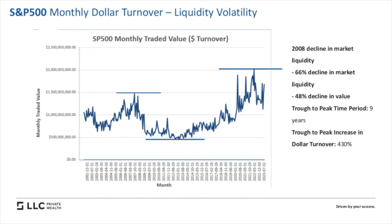Now, this is different than price action. The S&P 500 actually rallied fairly quickly after that, after all the selling had flushed through the system, but there was very limited liquidity going through the system. What's interesting is it did bottom in about 2012 and went on what is arguably one of the greatest bull runs ever of the stock market, and liquidity increased by 430% over a nine-year period. On the downside was a 66% decline in liquidity; the upside was 430% over nine years.